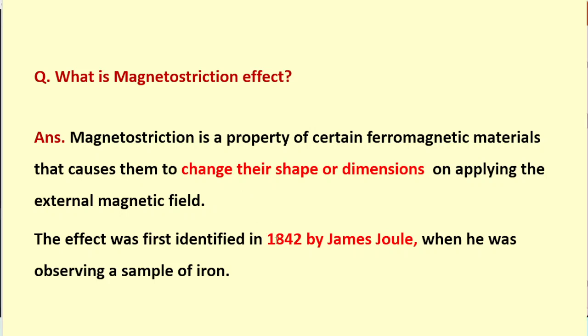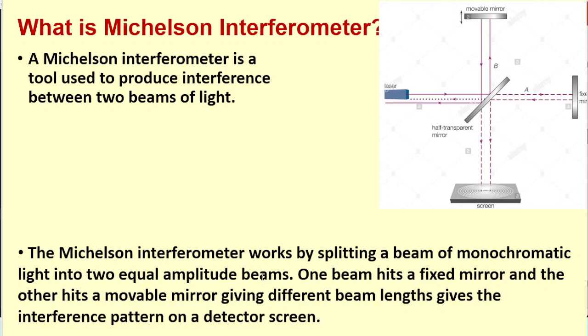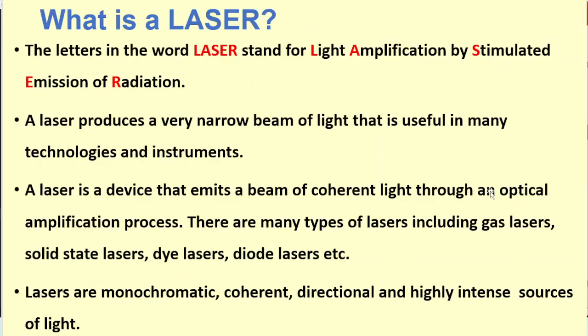What is Michelson interferometer? Michelson interferometer is a tool used to produce the interference between two beams of light. If we have a monochromatic or laser source and using this beam splitter, one mirror is fixed and one is movable, and then we get the interference pattern on the screen.